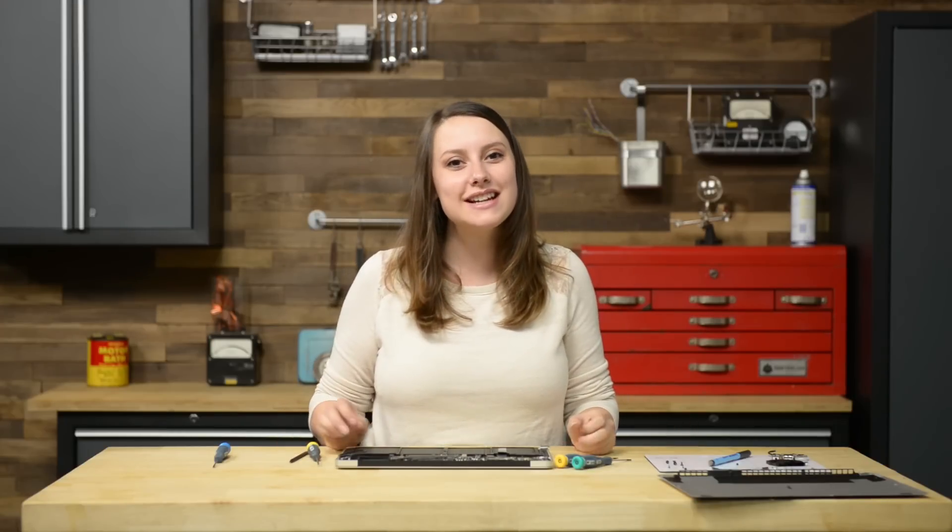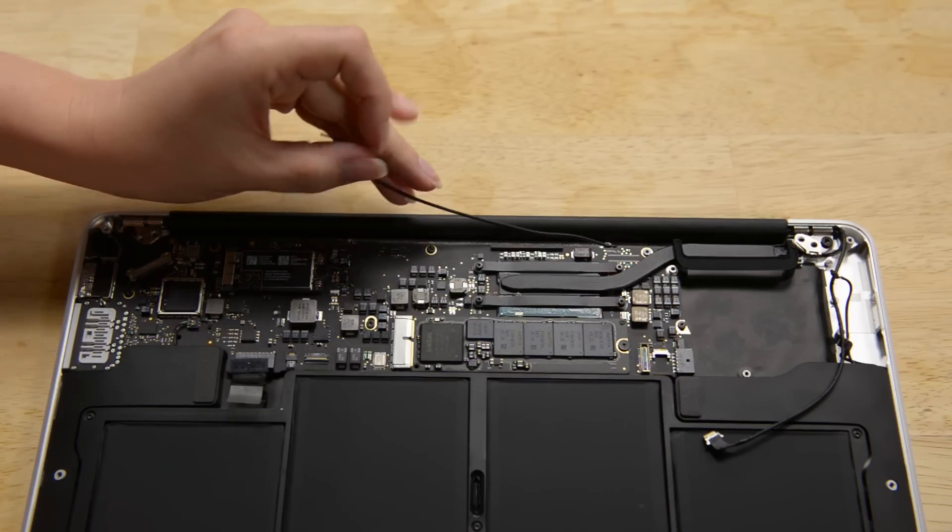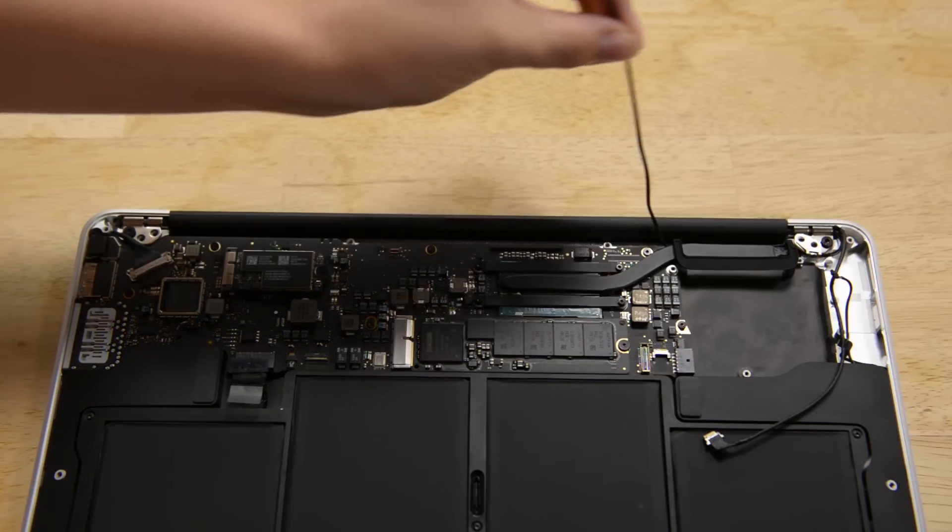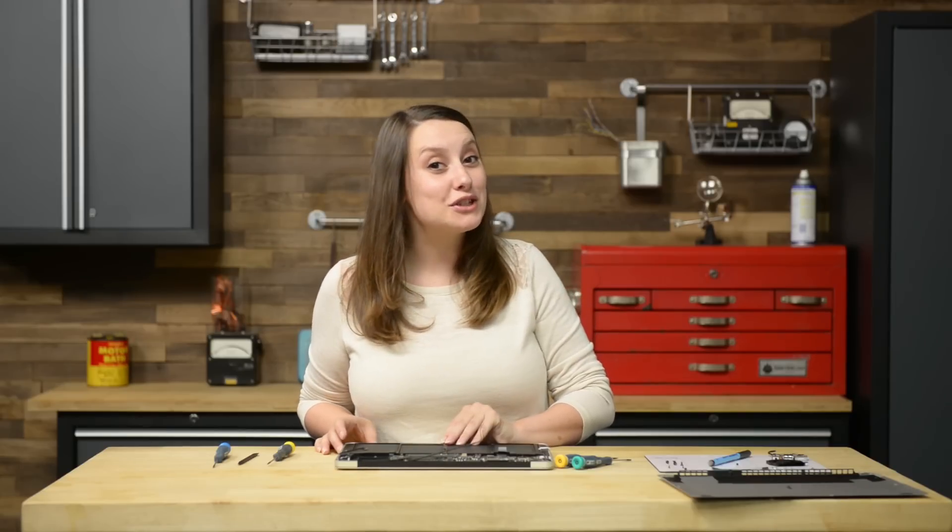Before we get to work on the last screws, let's go ahead and deroute the antenna cables out of the channel cut into the upper case. Open your display like you're about to use it and place it on your work surface on its side and let's get to work on those last screws.